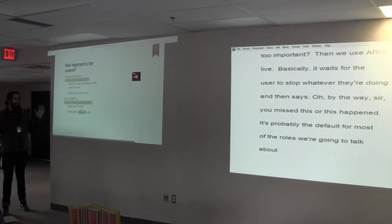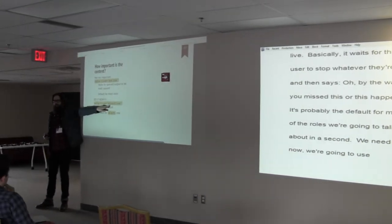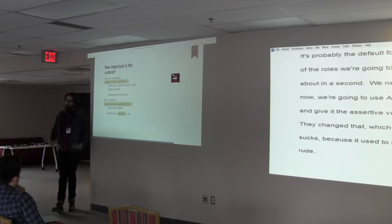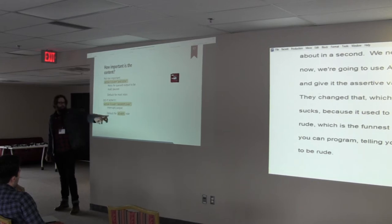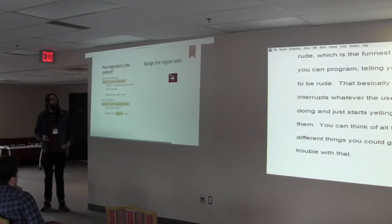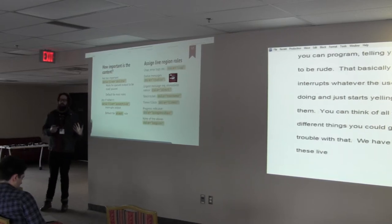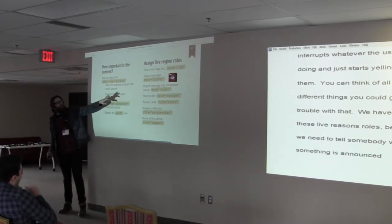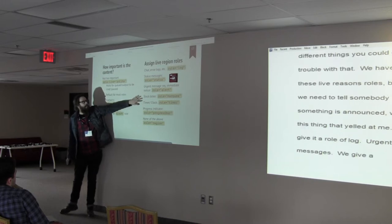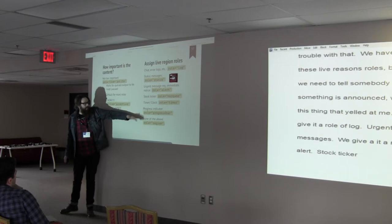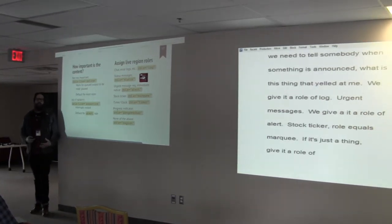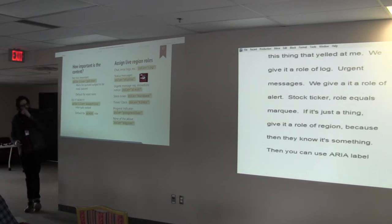And we do this with ARIA live. So first thing we have to ask ourselves is how important to the user is this change? Is it not too important? We use ARIA live polite. It basically waits for the user to stop whatever they're doing and then it says, oh, by the way, sir, you missed this or this happened. It's probably the default for most of the roles we're going to talk about in a second. If it's something like, oh my, we need this like now, we're going to use ARIA live and we're going to give it the assertive value. They changed that, which really sucks, because it used to be called rude, which was probably the funnest thing you could ever program. And that basically interrupts whatever the user is doing and just starts yelling at them. So we have to give these live regions roles, because we need to tell somebody when something's announced, what is this thing that should yell at me? So for chats, error logs, we give it a role of log. Status messages, that's self-explanatory. Warning messages, we give it a role of alert. Stock tickers, role equals marquee. Timers, role equals timer. Progress indicator, progress bar. And if it doesn't fit for any of them, give it a role of region.